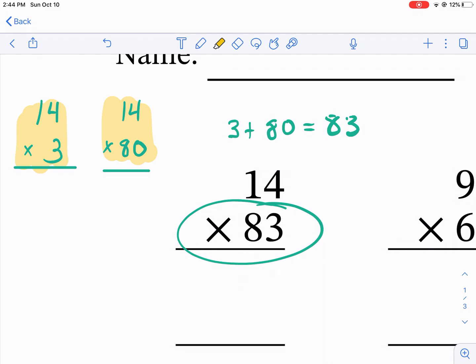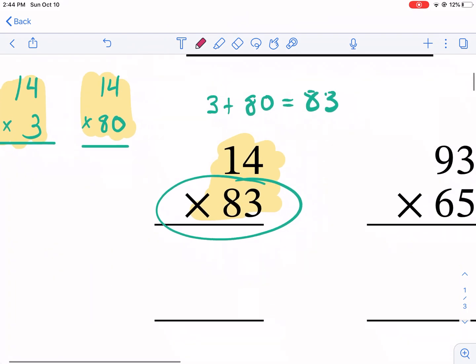We can do 14 times 3 and 14 times 80 and then we add the two together. That's the entire principle of two-digit by two-digit multiplication. Most students have a pretty easy time with something like this.